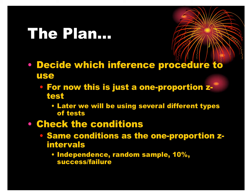We have to decide which procedure to use, because that tells us which conditions to check. Some conditions are common to all tests: is it a random sample? Is it less than 10%? Is it reasonable for them to be independent? For proportions, we check success-failure. For means, we'll check nearly normal — essentially that the sample size is large enough — using the central limit theorem.